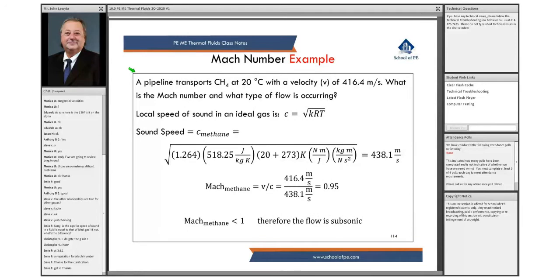Anyway, let's look at the pipeline. CH4 is methane at 20 degrees centigrade flowing at 20 degrees centigrade. We have your velocity here, 416 meters per second. What's the Mach number and what type of flow is occurring?